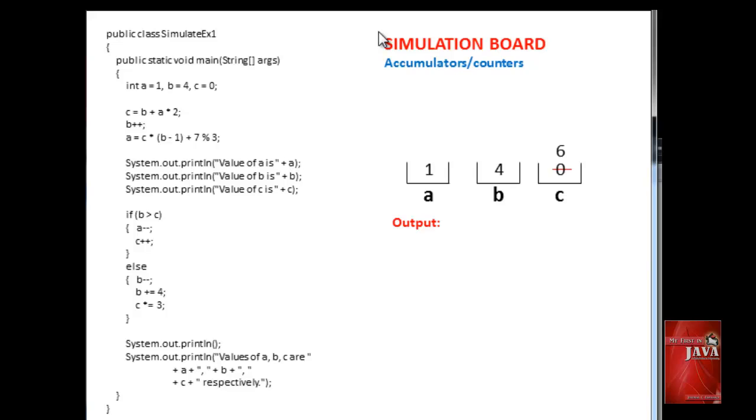We evaluate c equals b plus a multiplied by 2. Applying the rule of precedence, multiply a with 2. The product resulted to a value of 2, which is added to b with a value of 4. The sum of the expression is 6, which is assigned to variable c.